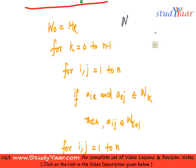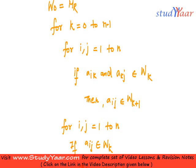For that we are going to look into this algorithm. This algorithm says for k is equal to 0 to n minus 1.